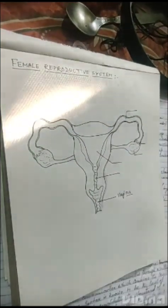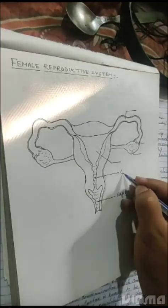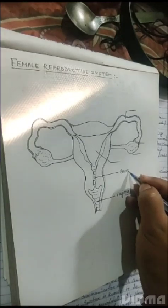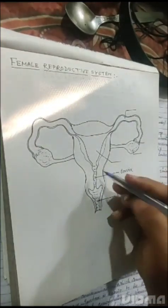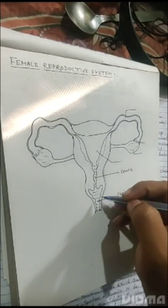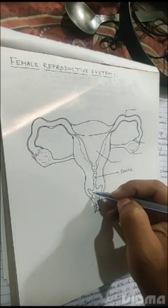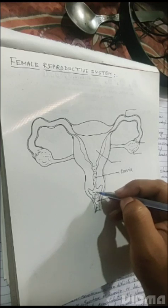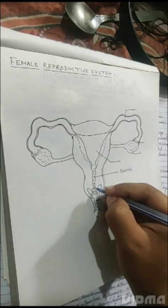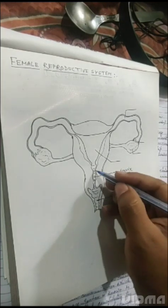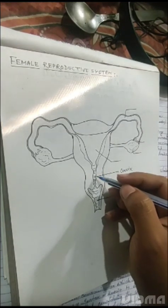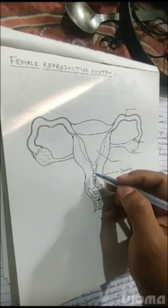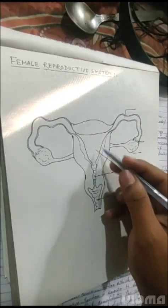Moving upwards, this is called the cervix. It is a small pathway, and just after copulation when the sperm is released here in this region, the sperm moves forward. The cervix also has some ciliated structure to help move the sperm forward to the inside.